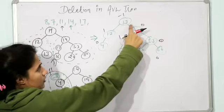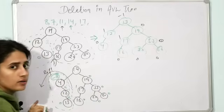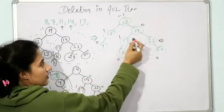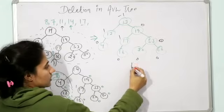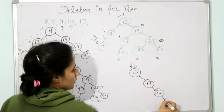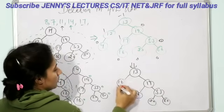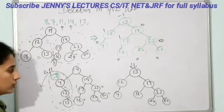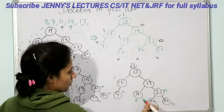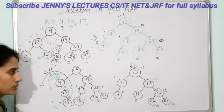Now delete 17. Find out where 17 is — 17 is greater than 13, go to the right part; 17 go to the left part; here we find 17. Now 17 is having only one child, so no problem — just simply delete 17 and replace it with 16. The tree becomes: 13, 19, 53, 60, 20, and here is 16. Balance factor of each node: 0, 1, 0, 0, 0, 0, 1 minus 1 = 0; 1 minus 2 = minus 1; 2 minus 3 = minus 1. So this tree is balanced.